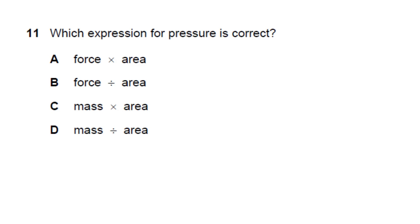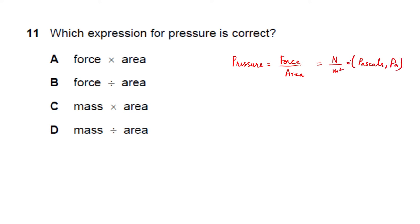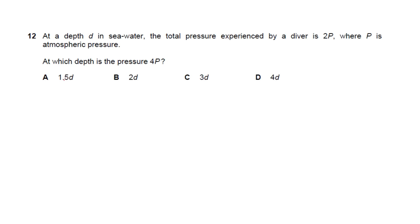Question 11: which expression for pressure is correct? Pressure is defined as force per unit area — newtons per metre squared, also expressed in pascals. Answer: B (force divided by area).